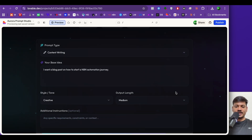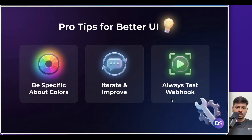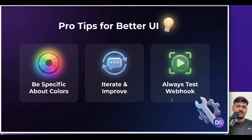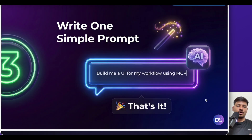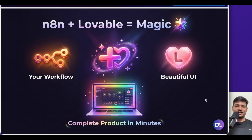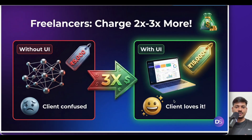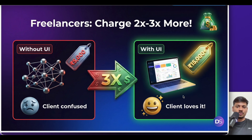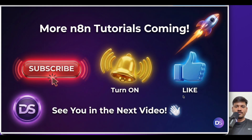This is how it works — it looks really amazing. If you want a better UI, mention the colors you want and keep prompting until you're happy with the result. We just gave one prompt and got a beautiful result within a few minutes. Earlier you may have charged less just to build the workflow — from now on you can build beautiful UIs and charge 2x or 3x more, because clients are going to love this. Join my free school community for JSON files and the step-by-step guide. If you liked this video, leave a thumbs up and subscribe for more AI automation videos.